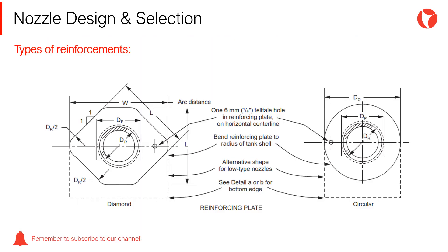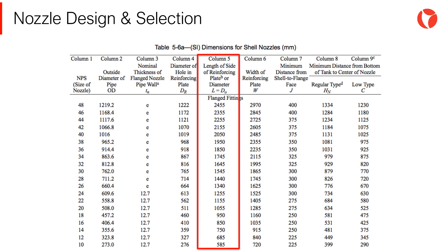Reinforcements used in storage tanks can be of two shapes: diamond and circular. The mechanical characteristics for both alternatives are identical; the difference lies in the construction method. Dimensions for reinforcements are found in table 5.6 of the API 650 standard, as shown in the picture.